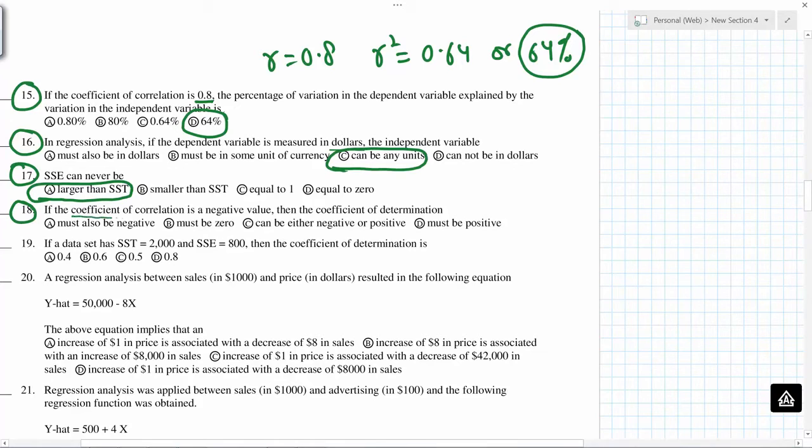If coefficient of correlation is negative, then coefficient of determination - so coefficient of determination is r square, so it cannot be negative. It has to be positive, it must be positive.